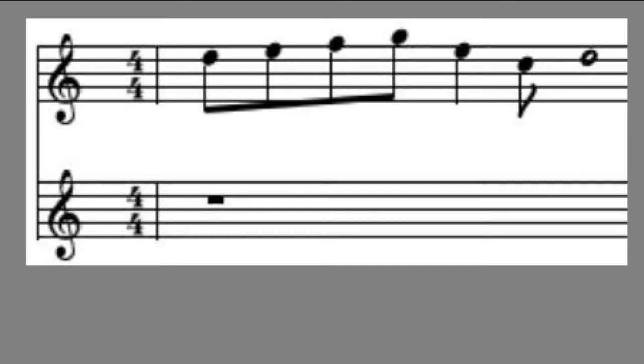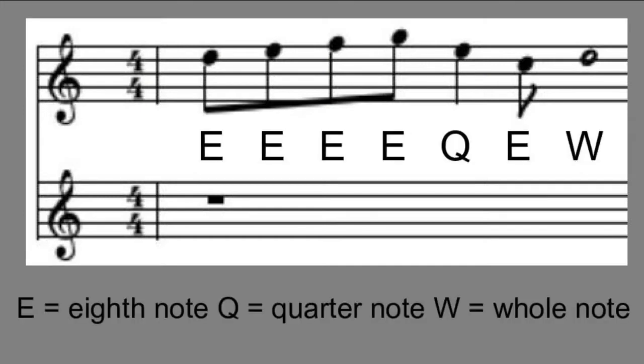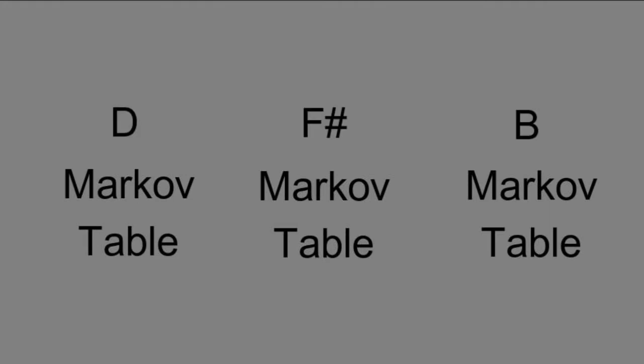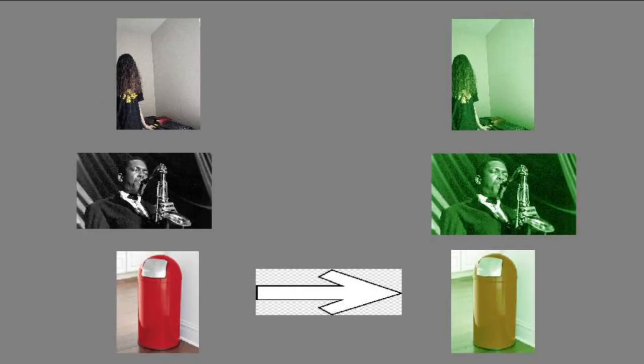We can apply this same idea to rhythm by replacing pitch values with rhythm values. Another thing I have added is to make different Markov tables for different root notes or root chords. This way, the music generation will only generate the notes that you play while in that key. This means that the generated music is only ever as out of tune as you are.